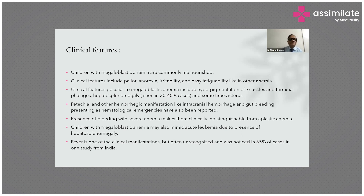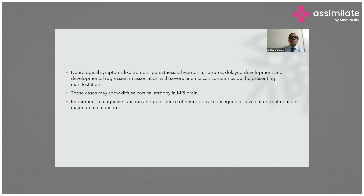Neurological symptoms like tremor, paresthesia, hypotonia, seizures, developmental delay, and developmental regression in association with severe anemia can sometimes be the presenting manifestation. These cases may show diffuse cortical atrophy on MRI brain in cases of developmental regression. Impairment of cognitive function and persistence of neurological sequelae even after treatment are a major area of concern.